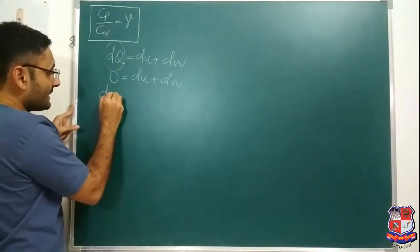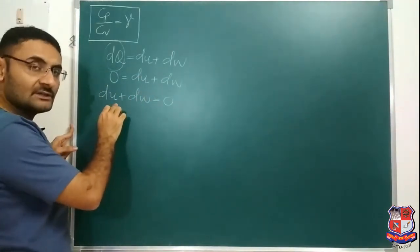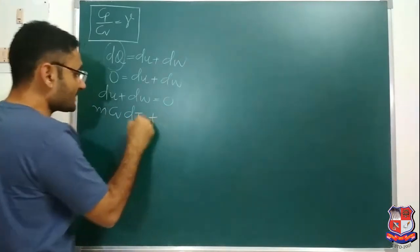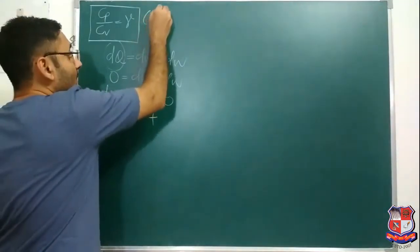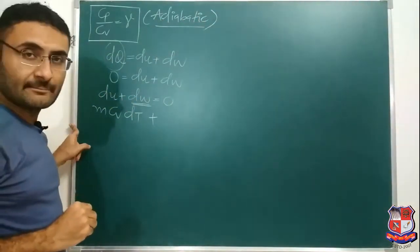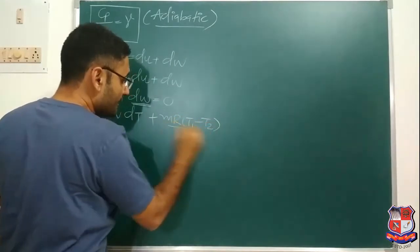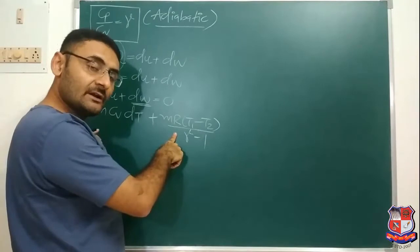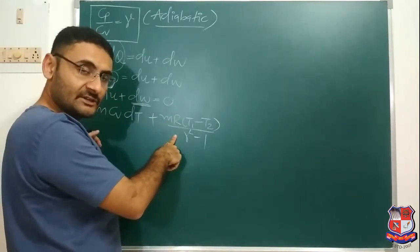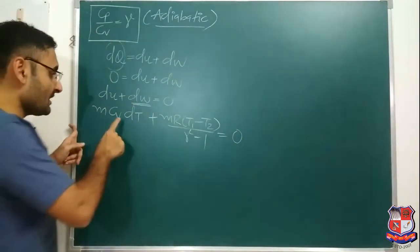Now, DU (change in internal energy) equals MCvDT, and DW (work done by the adiabatic process) equals MR(T1 minus T2) divided by (gamma minus 1). This formula for adiabatic work done has already been derived in thermodynamics video 04 or 05. Substituting both into our equation gives: MCv(T2 minus T1) plus MR(T1 minus T2) divided by (gamma minus 1) equals zero.